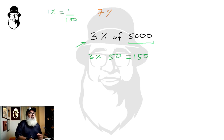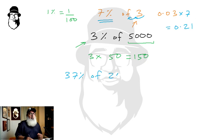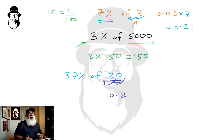To find seven percent of three: one percent of three is zero point zero three — just divide three by hundred by shifting the decimal point two places left — then multiply by seven to get zero point two one. For thirty-seven percent of twenty: one percent of twenty is zero point two, and thirty-seven times zero point two is seven point four, which is our final answer.